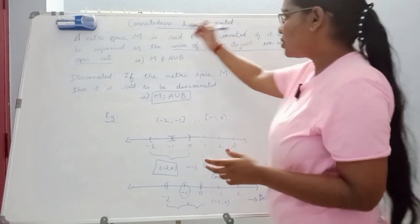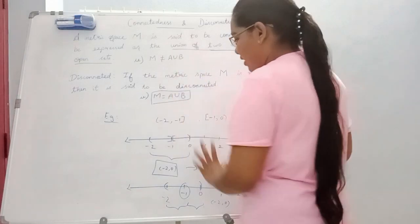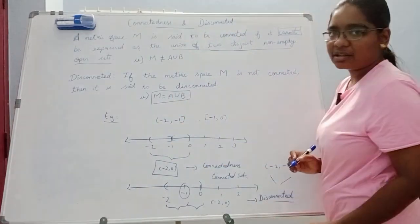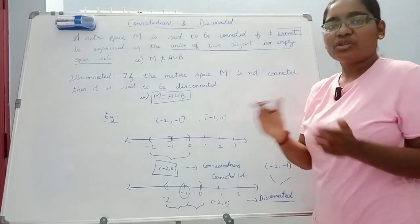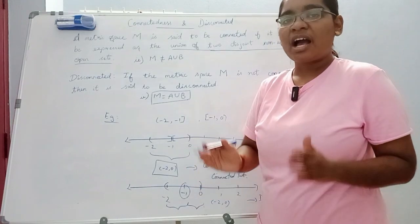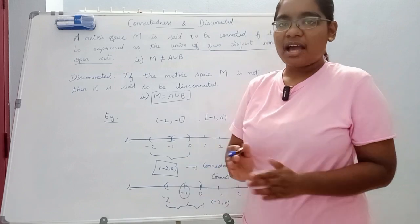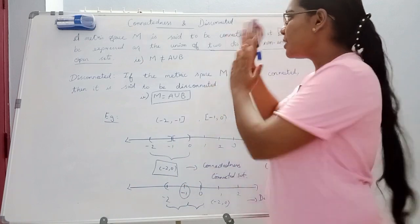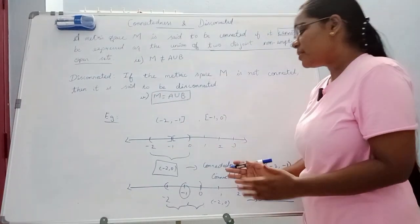If a set is connected, it cannot be expressed as the union of two disjoint non-empty open sets. That is what disconnected means — if you can express it as such a union, it is disconnected. If two sets share a common point, the whole part will be connected. If there is a gap, you disconnect.